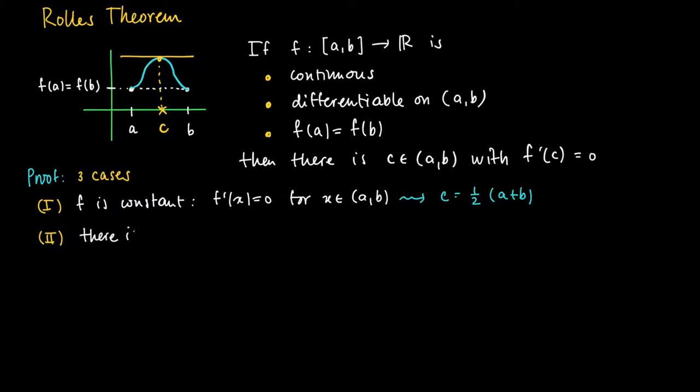Well the second case is where there is an x—assume there is an x such that f(x) is larger than f(a). So this means that by virtue of the extreme value theorem we know that there is a maximum. f has an absolute maximum in [a,b] since f is assumed continuous on a closed interval. But this maximum can never be equal to f(a) or f(b) because f(a) equals f(b) and we found an x with a larger function value. So the maximum is not attained in a or b. That's crucial here.